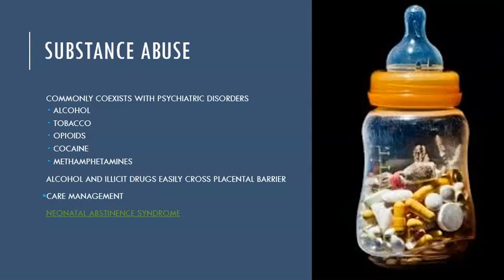Other common substances include tobacco, opioids, cocaine, and methamphetamines — the most common illicit drugs seen in pregnancy. These all have different effects on the baby. Page 276 in your textbook discusses the effects of each drug, and you should review that information.